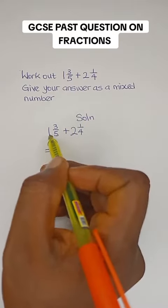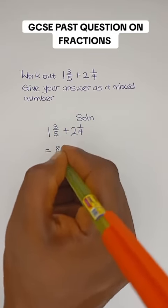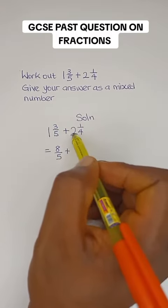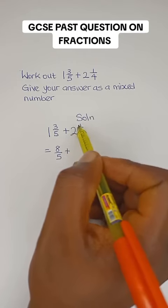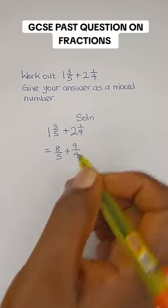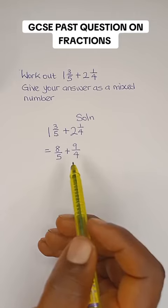5 multiplied by 1 is 5, and 5 plus 3 is 8. So we have 8/5. Plus, 4 multiplied by 2 is 8, and 8 plus 1 is 9. So we have 9/4. Now we have converted the mixed numbers to improper fractions.